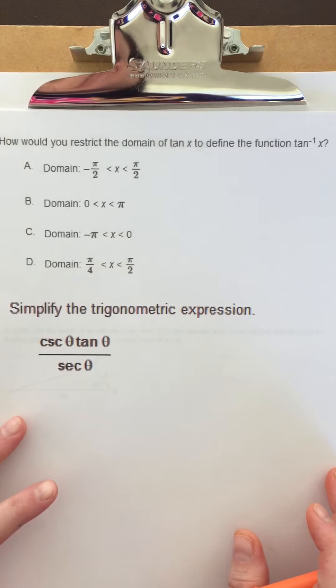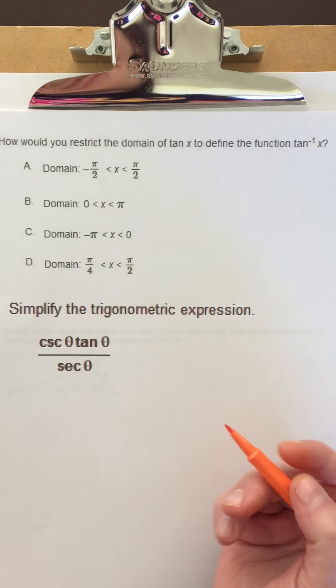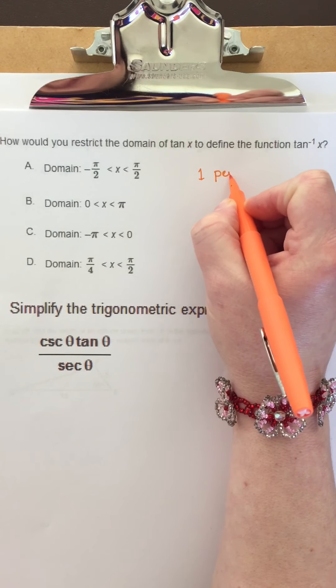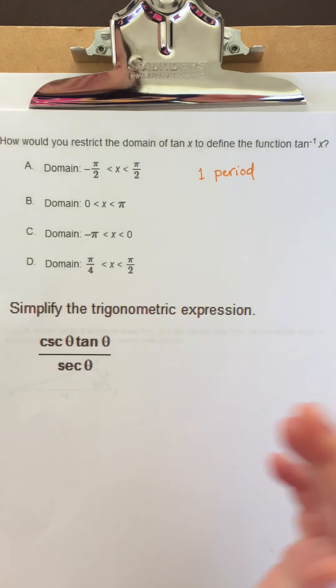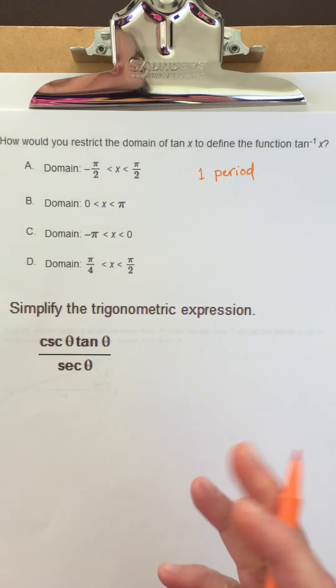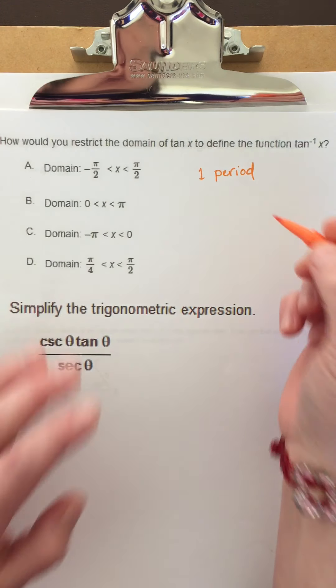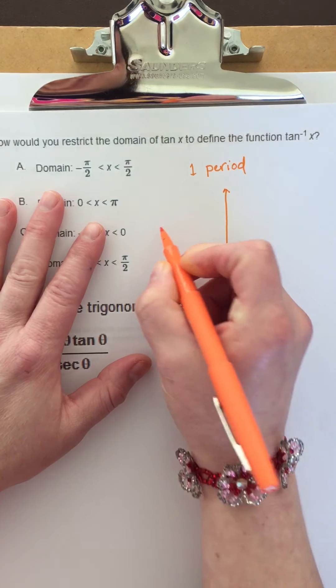It says, how would you restrict the domain of tangent x to define the function tan inverse x? You pretty much just want to restrict it to one period. If you remember when we did graphs of trig functions and found the asymptotes, we would set it equal to negative pi over 2 and positive pi over 2.